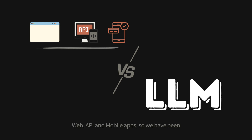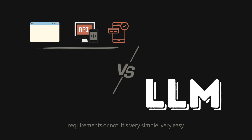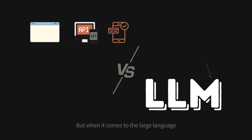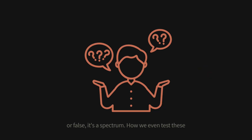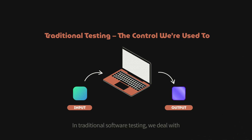Web APIs and mobile apps have been tested for decades — it's very simple: click a button, get a response, and check if it matches the requirements. But when it comes to large language models like ChatGPT, things flip upside down. The answer is never just a yes or no or a boolean true or false — it's a spectrum. So how do we even test these systems?